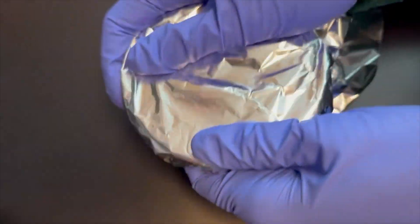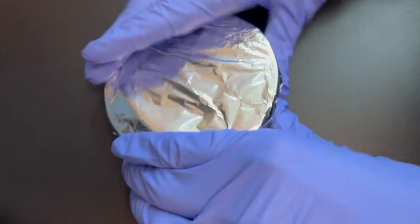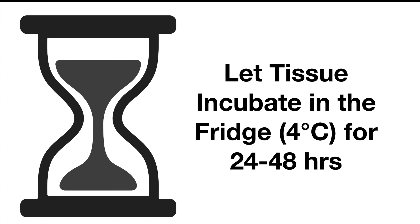Place into a petri dish and wrap with tin foil. Let the slice incubate in the fridge for a minimum of 24 hours after crystal placement.